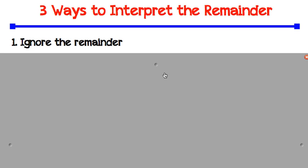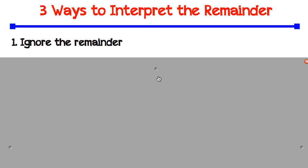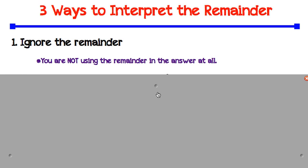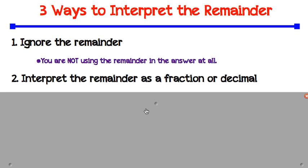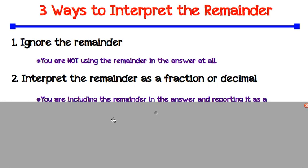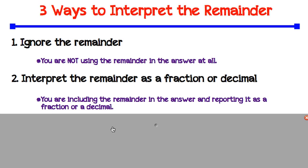First, you can choose to ignore the remainder. This means that you are not using the remainder in the answer at all. Second, is to interpret the remainder as a fraction or decimal. This means that you are including the remainder in the answer and reporting it as a fraction or a decimal.